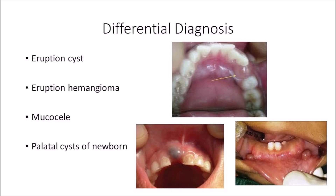Next is the mucocele, which is a cyst developing in minor or major salivary gland tissue. It is most commonly seen in the buccal mucosa or labial mucosa, i.e., the lip region. In contrast, the gingival cyst of newborn is always seen in the alveolar process of a neonate, and the mucocele also occurs in an older age group.